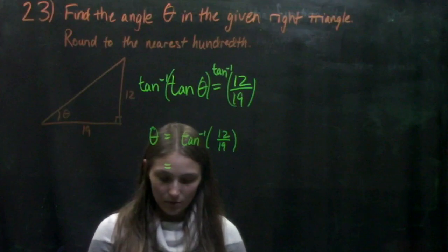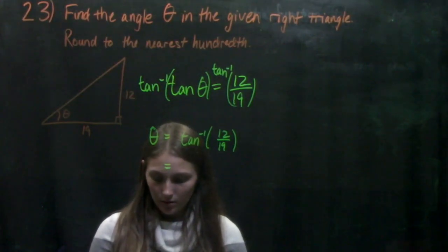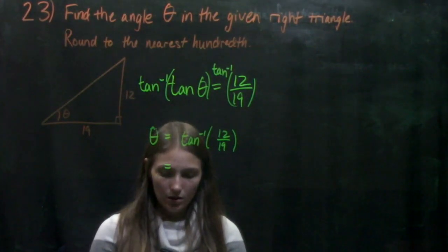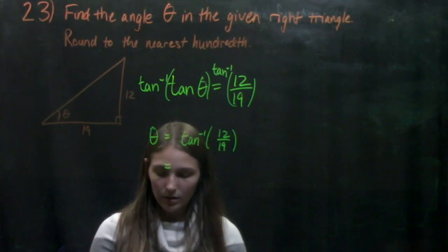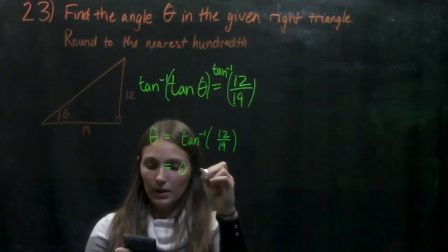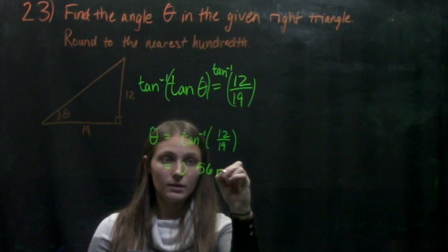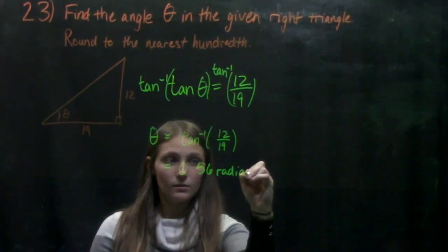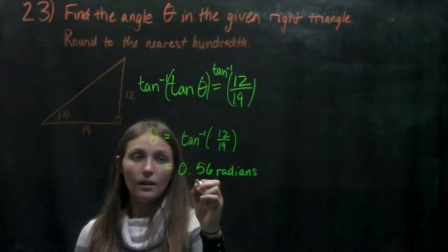make sure you're in radian mode, we will get inverse tangent of 12 divided by 19 equals 0.56 radians. And that's our answer.